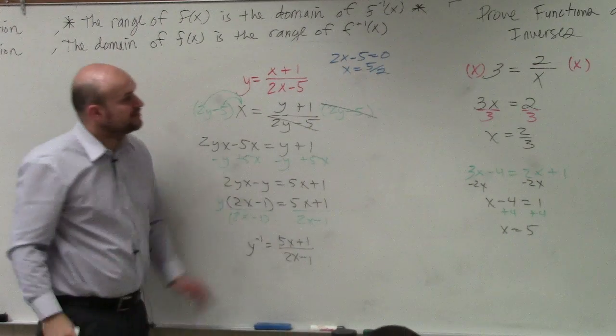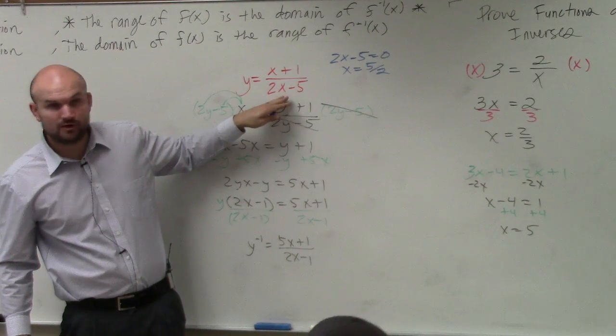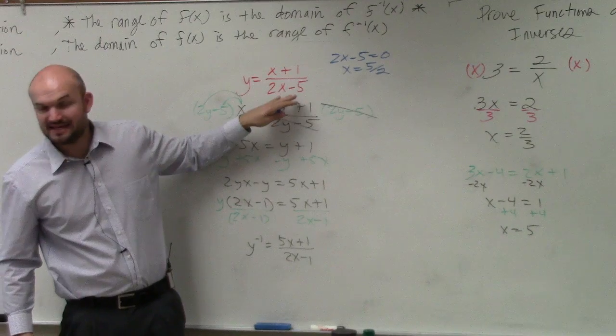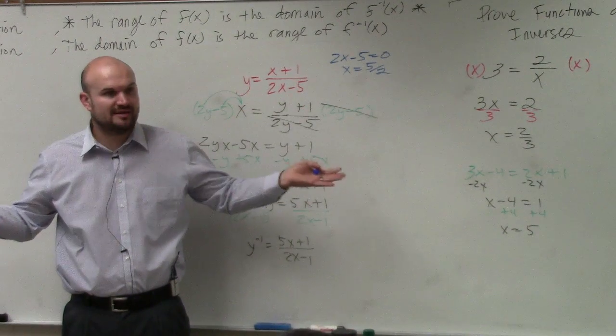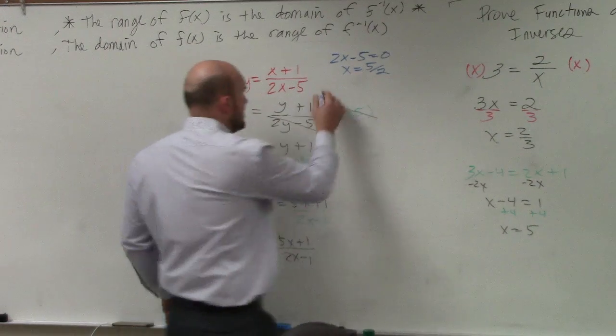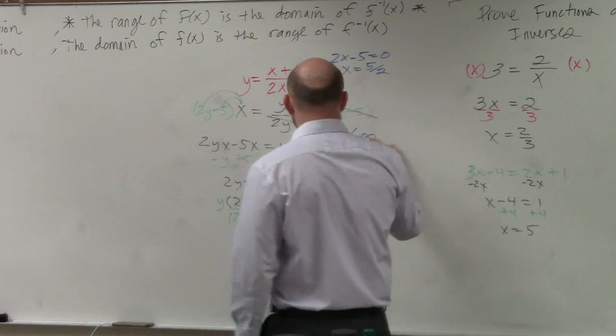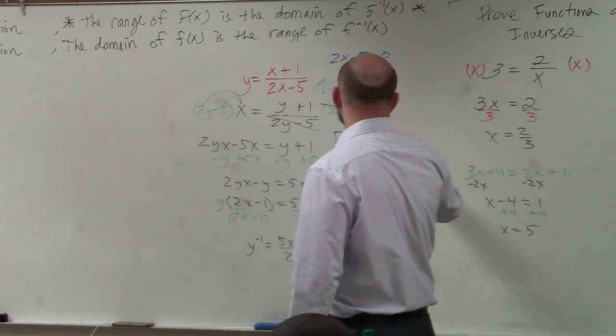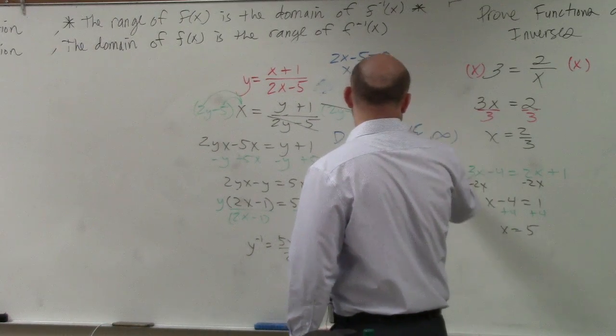So that means when x equals 5 halves, my denominator is 0, right? Which is no-go for domains, right? That's not in the domain. Is any other number bad or any other number not in the domain? No. So we'd write domain. Actually, let me write it down here. All real numbers, so from negative infinity to 5 halves, and from 5 halves to infinity, union.